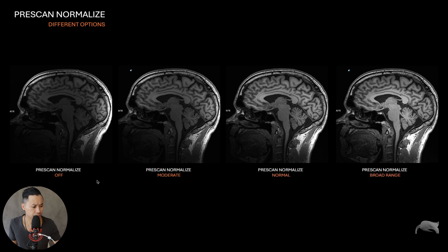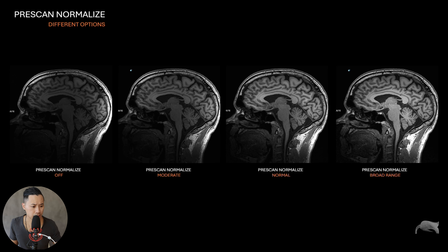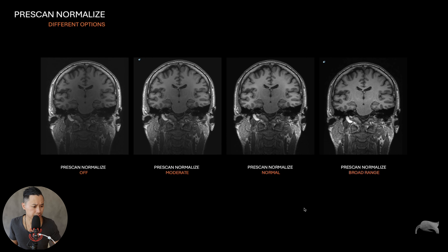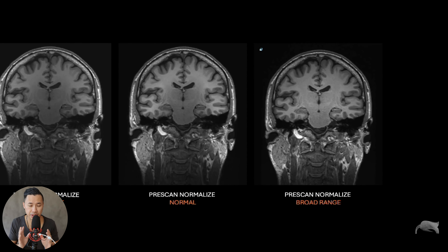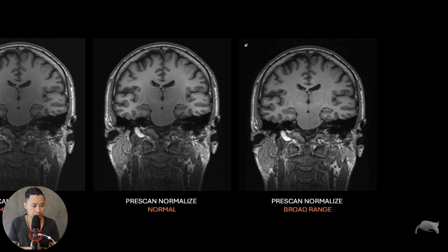I did one more test on the brain — this is a 32-channel brain coil on 3T. We compared off versus broad range. Looking at it with off, it's quite bad because the signal is very bright in the upper part of the brain and the lower part gets darker and darker. Usually we use the normalize option which is the standard, but looking at the reconstructions using broad range, you can see that the middle part of the brain is much more homogeneous compared to the normal setting, where you get a little signal loss or inhomogeneity and things get darker.